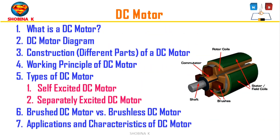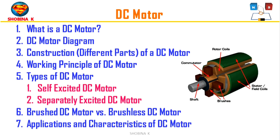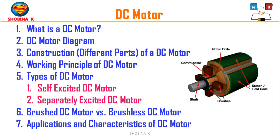First we will see what is a DC motor, then the DC motor diagram, after which we will see the different parts of a DC motor. Once this is done we will move on to DC motor working, then the types of DC motor — including self-excited and separately excited DC motor — the difference between brushed and brushless DC motor, and finally the applications of DC motor.